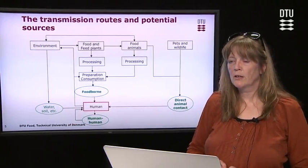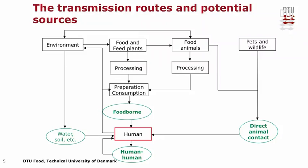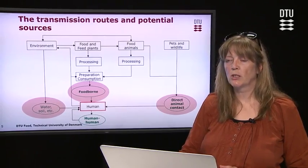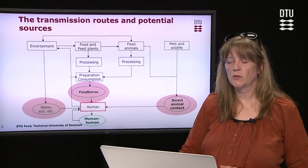This figure illustrates the many different transmission routes that a foodborne infection can have. Even though we call it a foodborne infection, many of them will also be able to transmit by other means. We talk about three major transmission routes: the foodborne route, the direct animal contact route, and the environmental route which also includes water. Human-to-human transmission is also an issue, but we normally do not consider it as much in the whole perspective of source attribution.